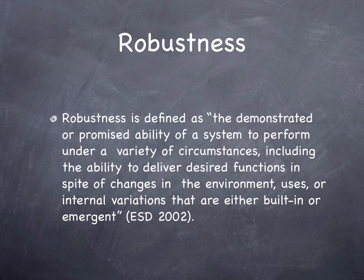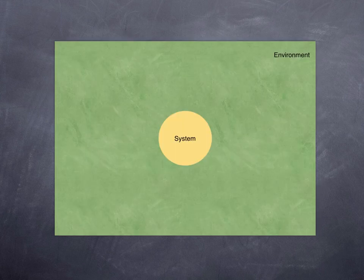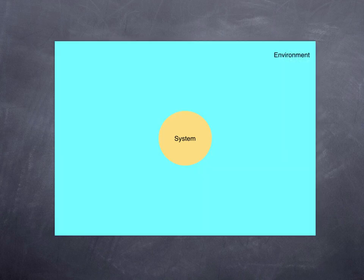Robustness is defined as the demonstrated or promised ability of a system to perform under a variety of circumstances, including the ability to deliver desired functions in spite of changes in the environment, uses, or internal variations that are either built-in or emergent. Here we see a system — the yellow circle — embedded in an environment, the green rectangle. If the system still works even as the environment changes, it is robust.